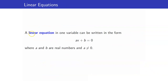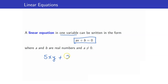Let us go to the definition of a linear equation. It is an equation which can be written in the form Ax plus B equals zero, where you have only one variable and the exponent of the variable equals one. It doesn't have to be x — as long as there is one variable with exponent one, and A and B are real numbers with A not equal to zero. For instance, 5xy plus 2 equals zero is not a linear equation because we have two variables here.